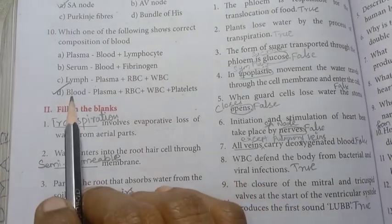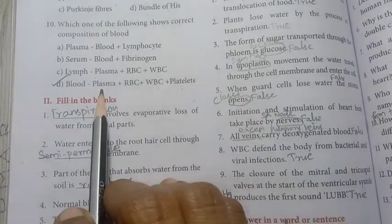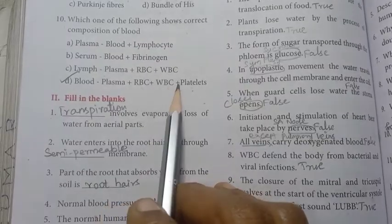It is the composition of blood: plasma, RBC, WBC, platelets. So plasma plus RBC plus WBC plus platelets.